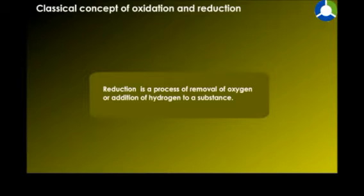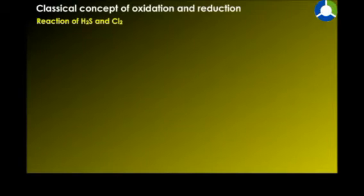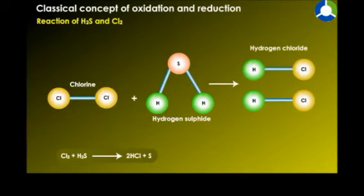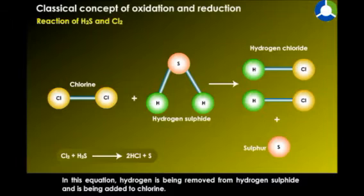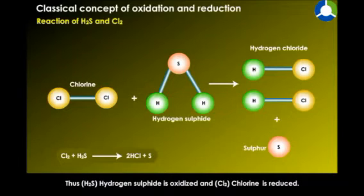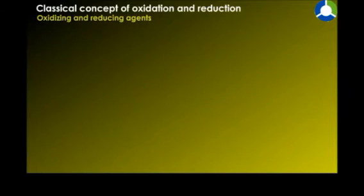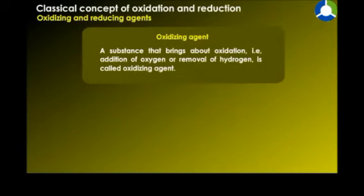Reduction is a process of removal of oxygen or addition of hydrogen to a substance. For example: Cl₂ + H₂S → HCl + S. In this reaction, hydrogen is removed from H₂S and added to chlorine, so H₂S is oxidized and Cl₂ is reduced. Oxidation and reduction together in a reaction is called a redox reaction.